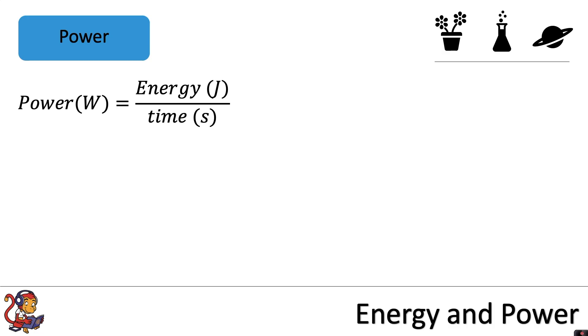You can work out how much energy has been transferred by a particular appliance by rearranging this equation. Energy equals power times time. So the higher the power rating of the appliance, the more energy it has transferred in a particular amount of time.